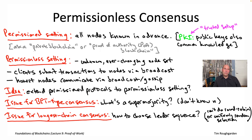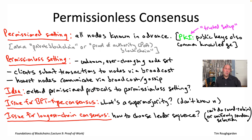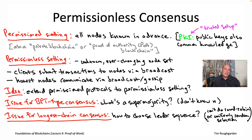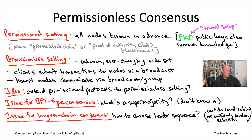Those BFT-type protocols — nodes stay in constant coordination with each other. Blocks are finalized one at a time. To finalize a block, you need a lot of agreement: two stages of voting, and you needed a super majority — more than two-thirds of the nodes — to agree on each stage. Because those BFT-type protocols are so conservative in finalizing blocks, you never have any forks, even in the partially synchronous model and under network attacks, as long as more than two-thirds of nodes are honest.